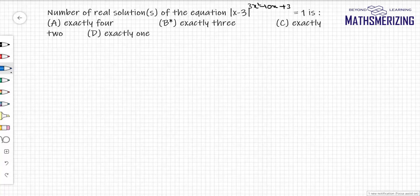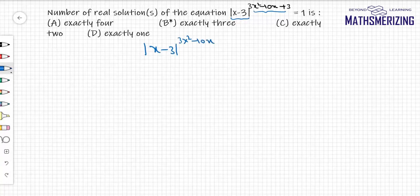The question is: find the number of real solutions of the equation |x-3| to the power (3x² - 10x + 3) equals 1. I'll write the equation: |x-3|^(3x² - 10x + 3) = 1.